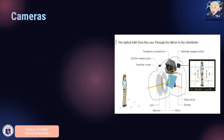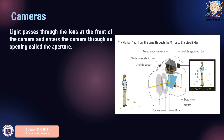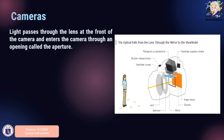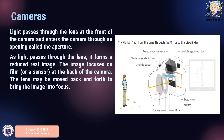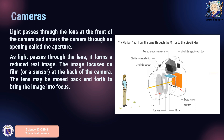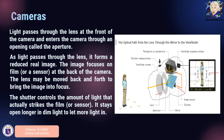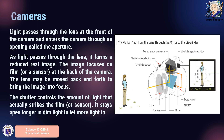Whether film or digital, cameras work the same way. Light passes through the lens at the front of the camera and enters through the opening called the aperture. This light passes through the lens where it forms a real, reduced image. The image focuses on the film at the back of the camera, and the lens may be moved back and forth to bring the image into focus. The shutter controls the amount of light that strikes the film or sensor, opening longer in dim light to let more light in.